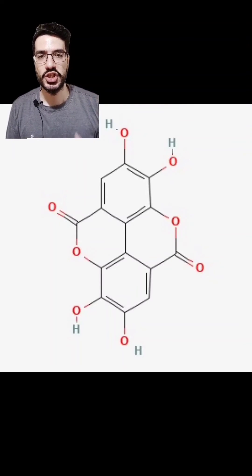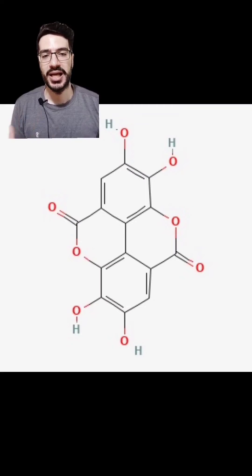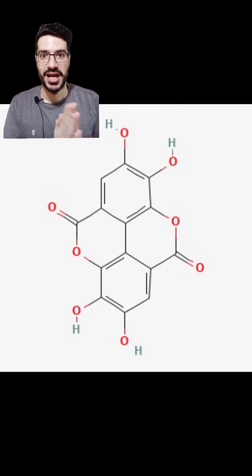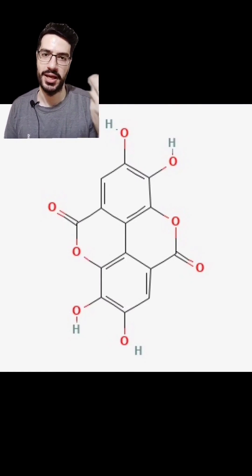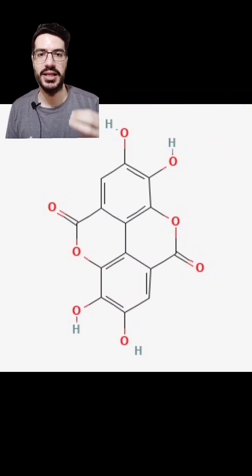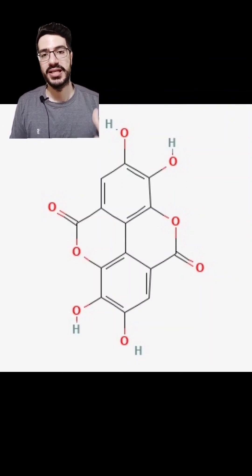The second way is depigmentation through the melanogenesis process, which is important in producing melanin. The main enzyme is tyrosinase, which is a copper-containing enzyme that has copper inside the protein of the enzyme.